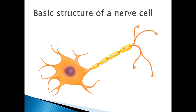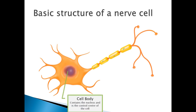It looks like one of these, so let's go through the individual parts. In the middle, this big area is called the cell body, and that contains the nucleus and is the control center of the cell. The nucleus is called the control center because it contains DNA, which is basically a set of instructions that tell the cell what to do.